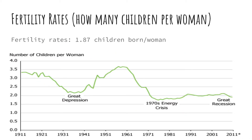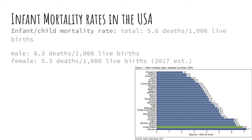The USA has a 1.87 fertility rate, which means how many children are born under a woman. The USA has an infant mortality rate of 5.8 deaths per 1,000 live births, and is ranked 170 out of 225 in the world — in this case, the higher number the better. This could be because many infants inside the womb can gain harmful bacteria that can kill them.